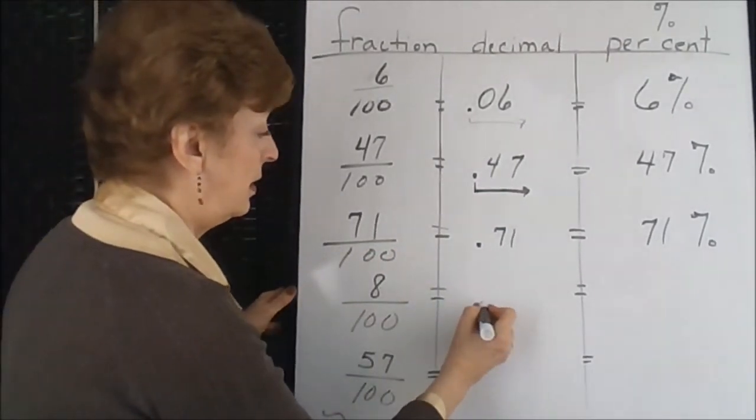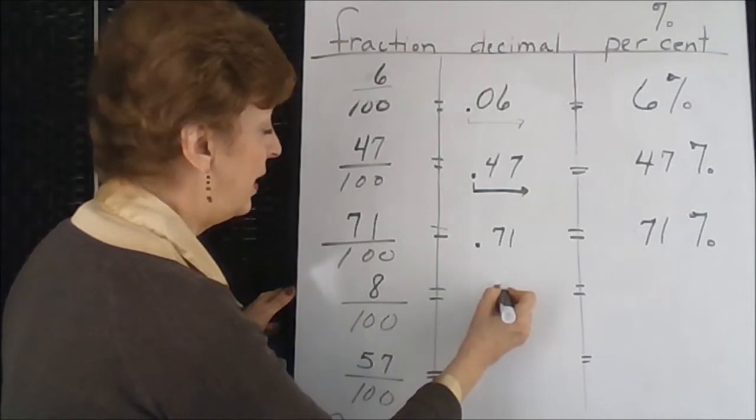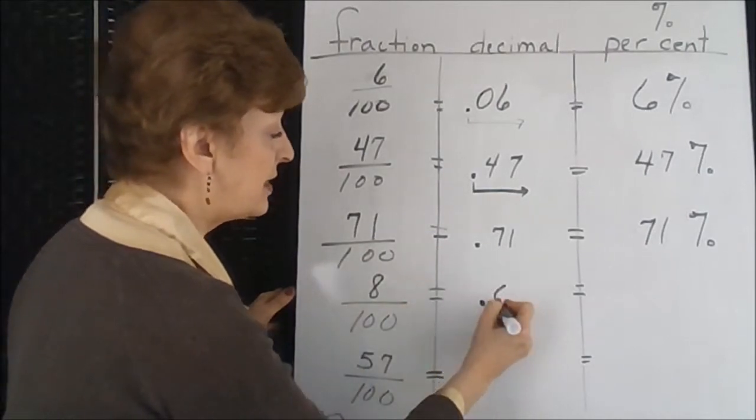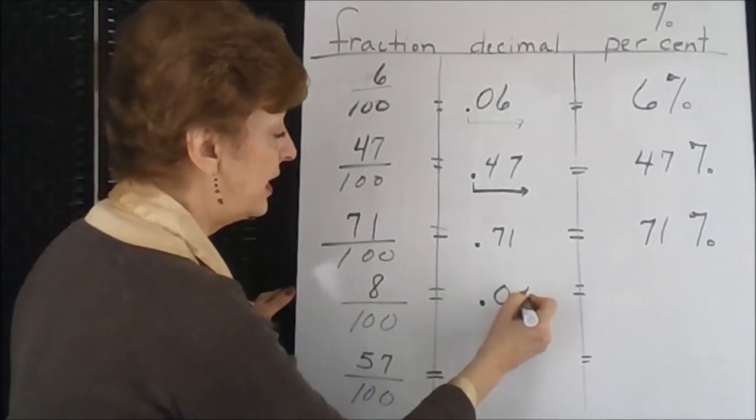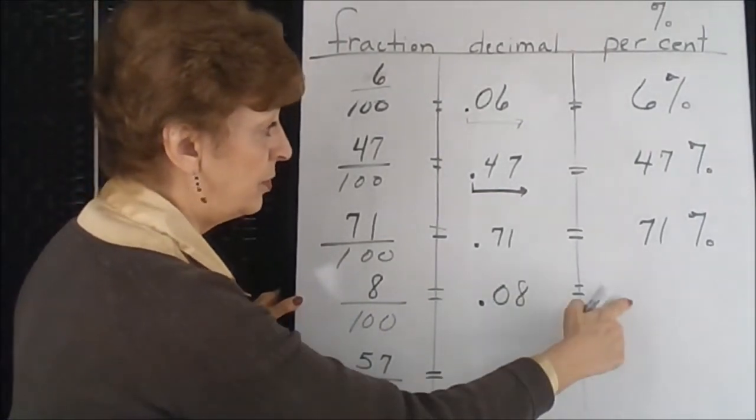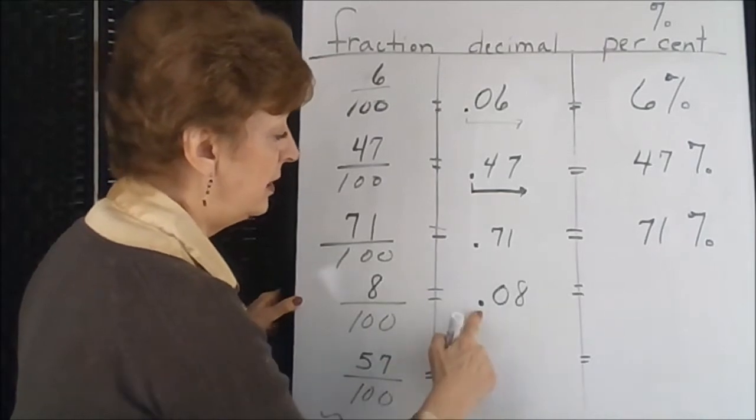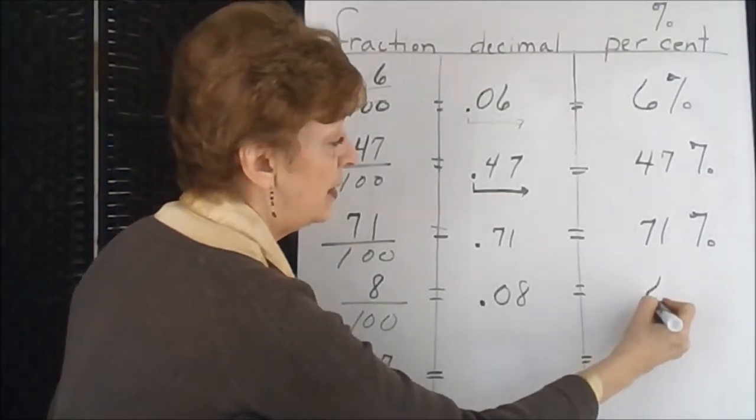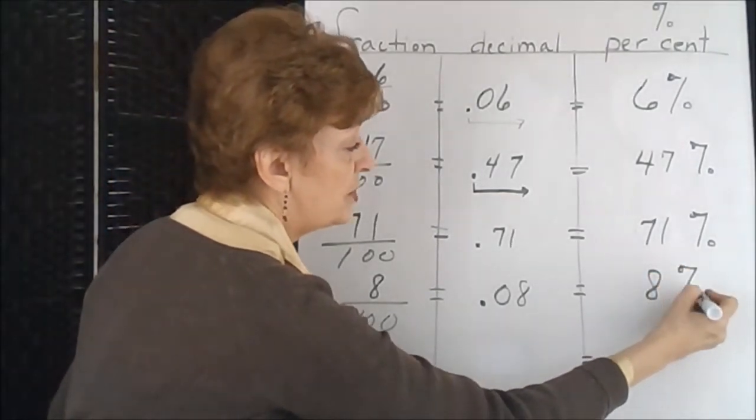Eight hundredths. We would have our decimal point. The eight has to end up in the hundredths column, so we need a placeholder for the tenths, and the eight is in the hundredths column now. Move it over two places to the right. We can just do an eight, and then the percent sign.